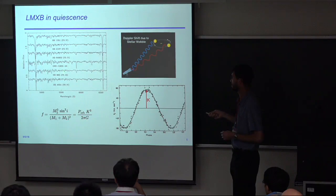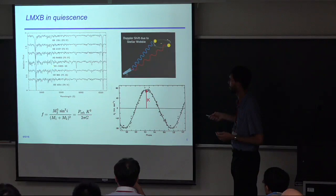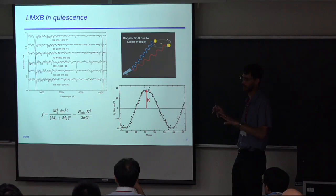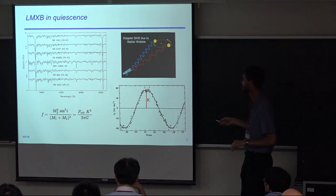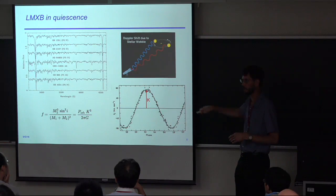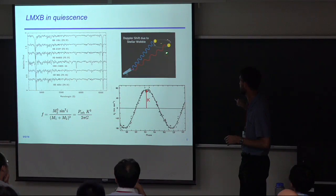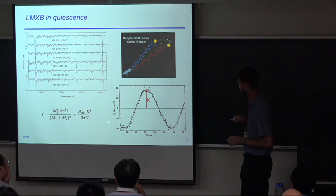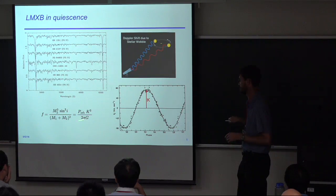First you find the optical emission from the companion. This shows several different template stars and one black hole X-ray binary. You can see these absorption lines are from the photosphere of the optical companion. Once you can measure these absorption lines, you can measure how they shift — redshift and blueshift — as the companion orbits the black hole. When it's moving toward us we see a blueshift; when moving away, a redshift. That's what gives us the radial velocity curve. You measure the semi-amplitude, the K parameter, and from that you can measure the mass function.